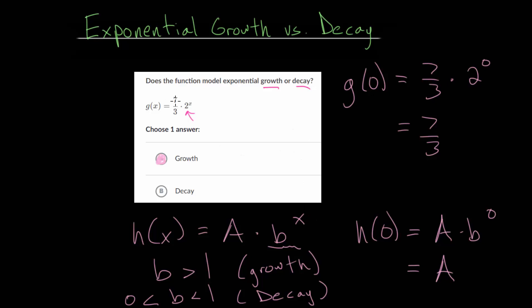The other way is to just plug in values and see what happens. So we already looked at when x is 0, it's just 7 thirds. But if we look at when x is 1, so now we have 2 to the first, so we're going to multiply 7 thirds by 2, so that's 14 thirds.